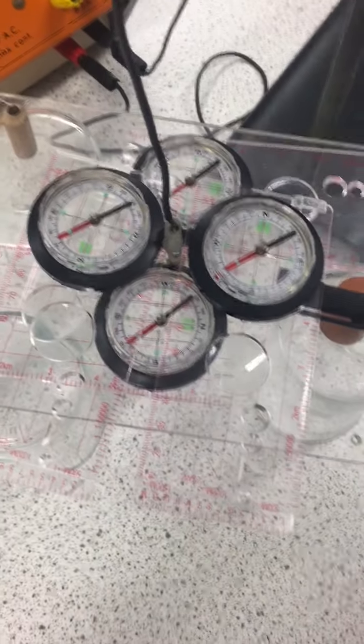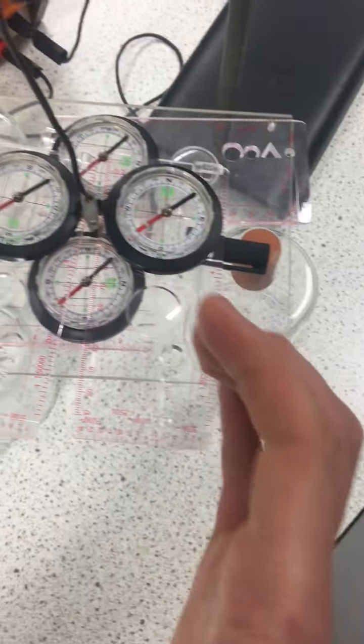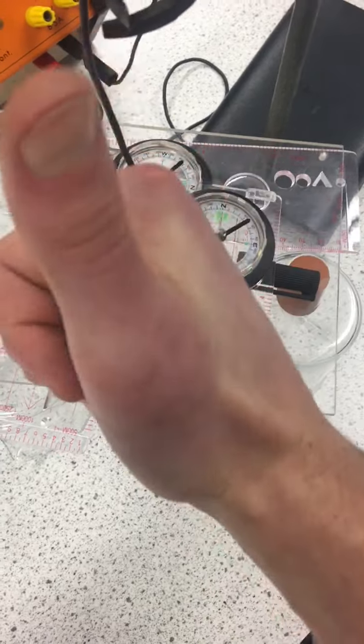So we should see the compasses align with the magnetic field lines. We should see the red needle on the compass pointing around the wire.